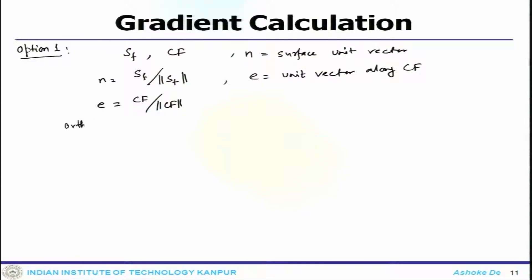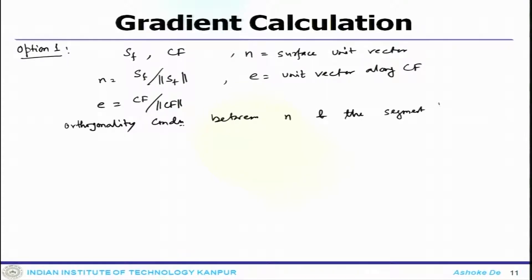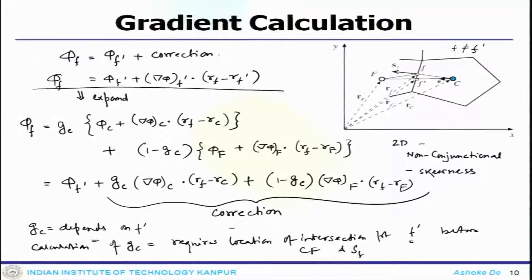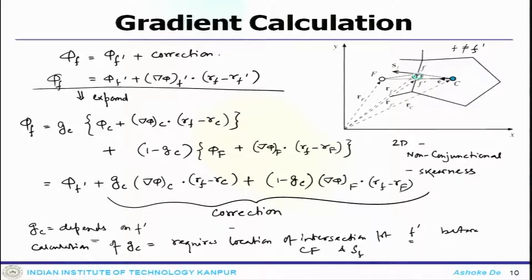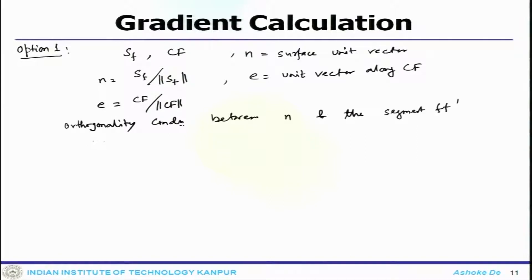E can also be calculated as Cf divided by the magnitude of Cf. Now you can find out the location of f prime by exploiting the orthogonality condition that exists between n and the segment Ff prime. Using that, one can write that (Rf minus Rf prime) dot n equals 0.